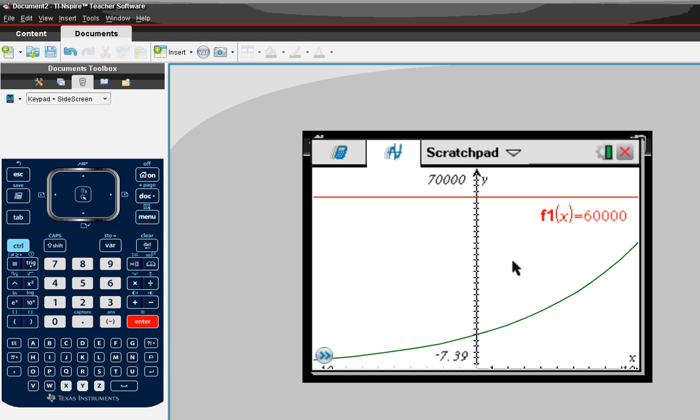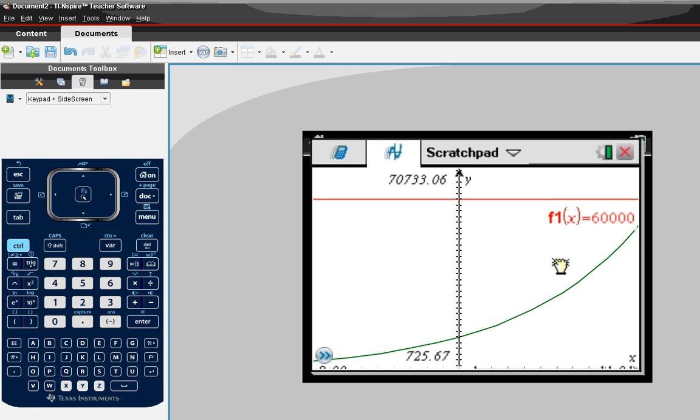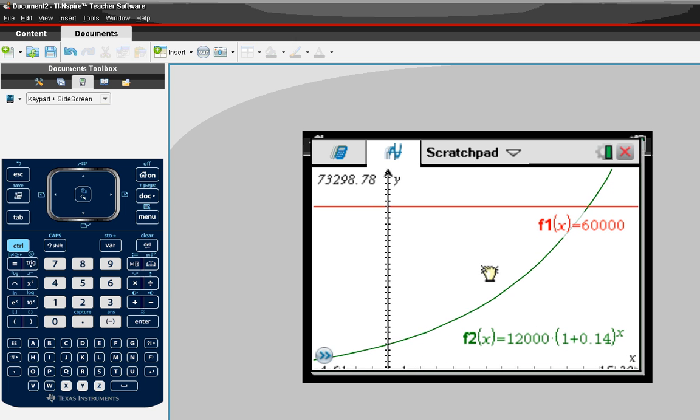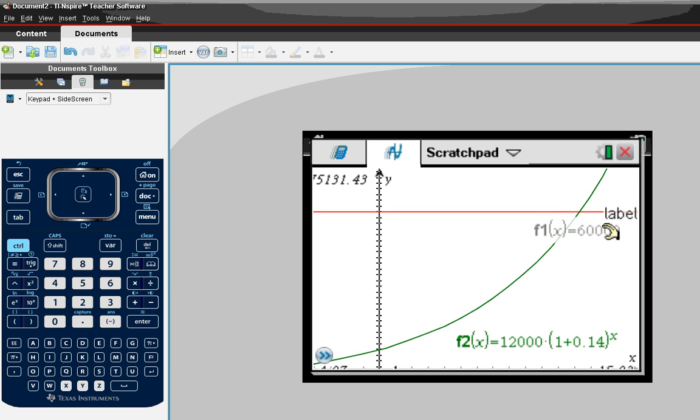Now I can see both of my graphs, but I'm needing to look for the intersection. So I'm just going to click and hold in a blank space on my graph, so that hand shows up and then I can move it over. Now I can see where my graph is.